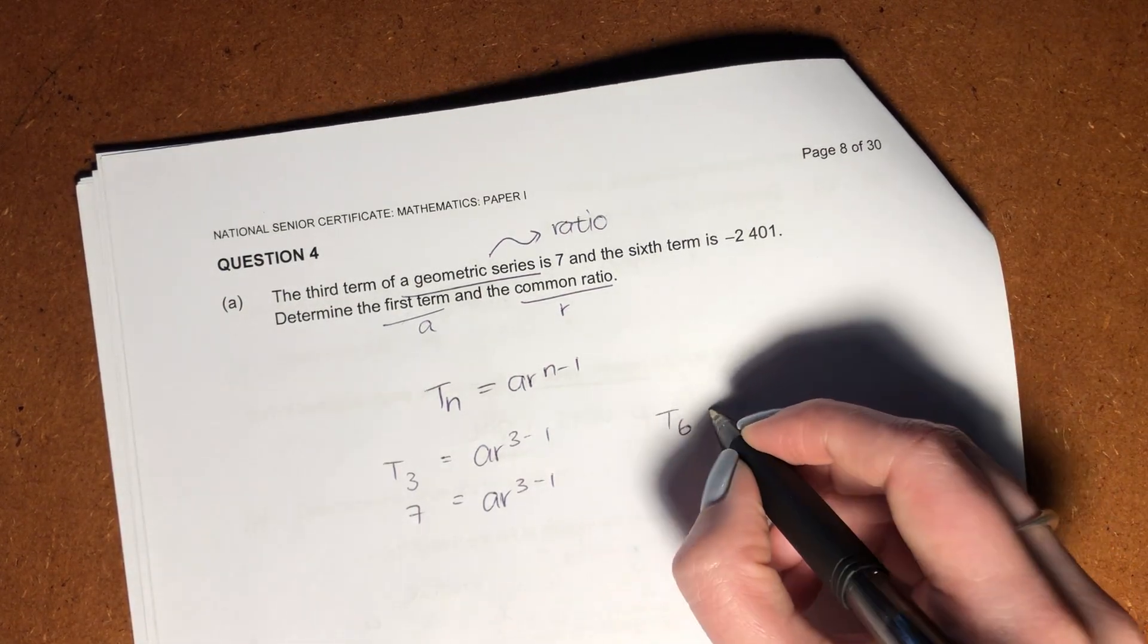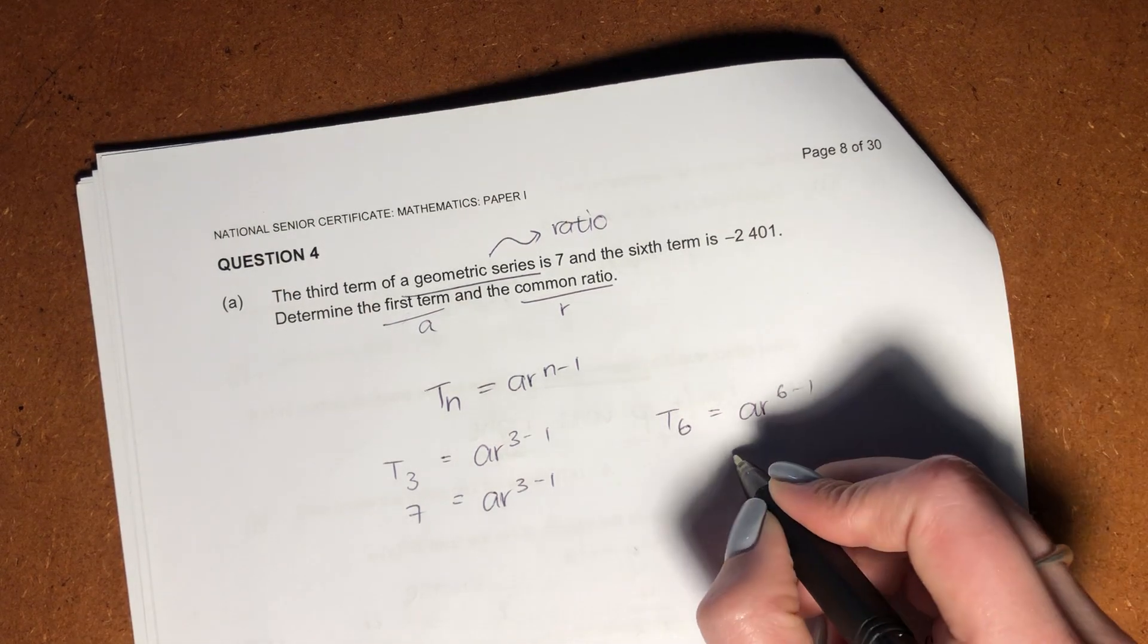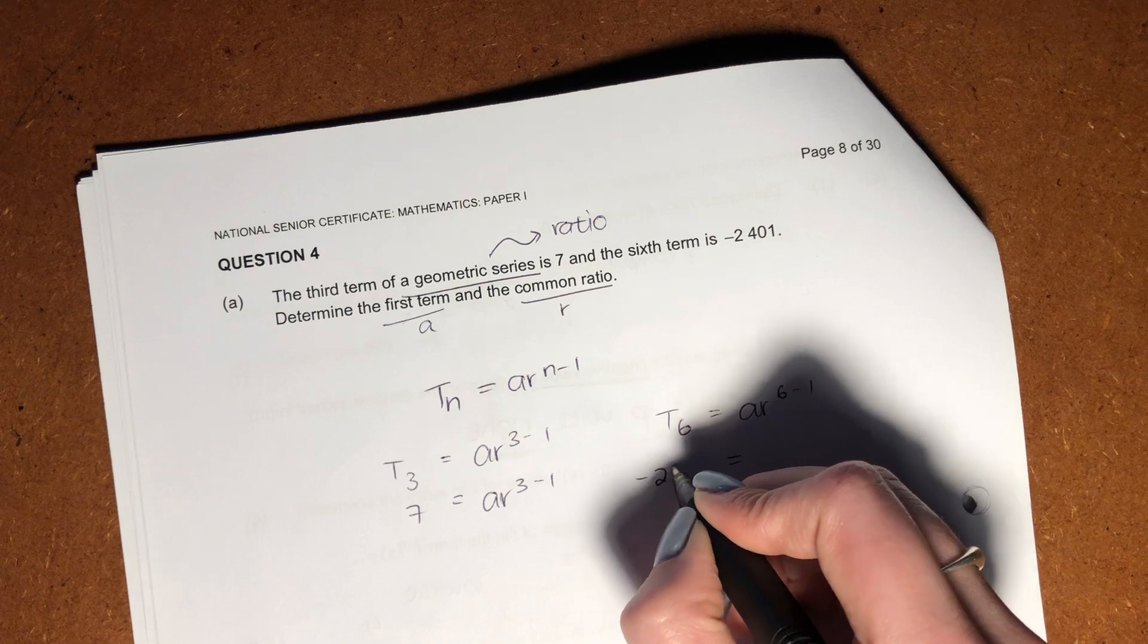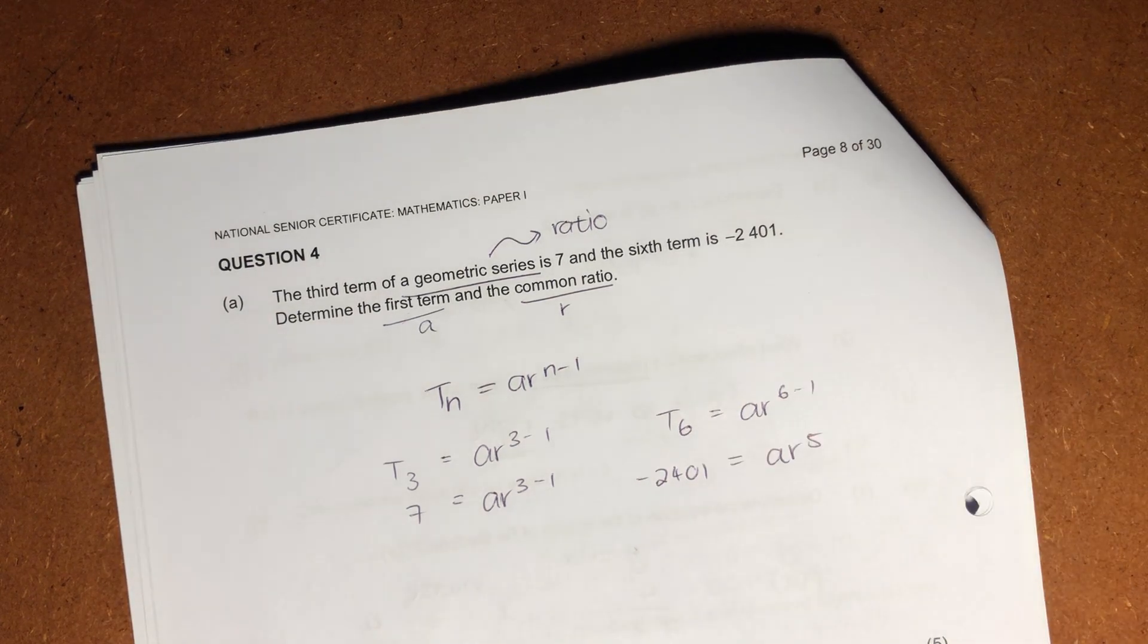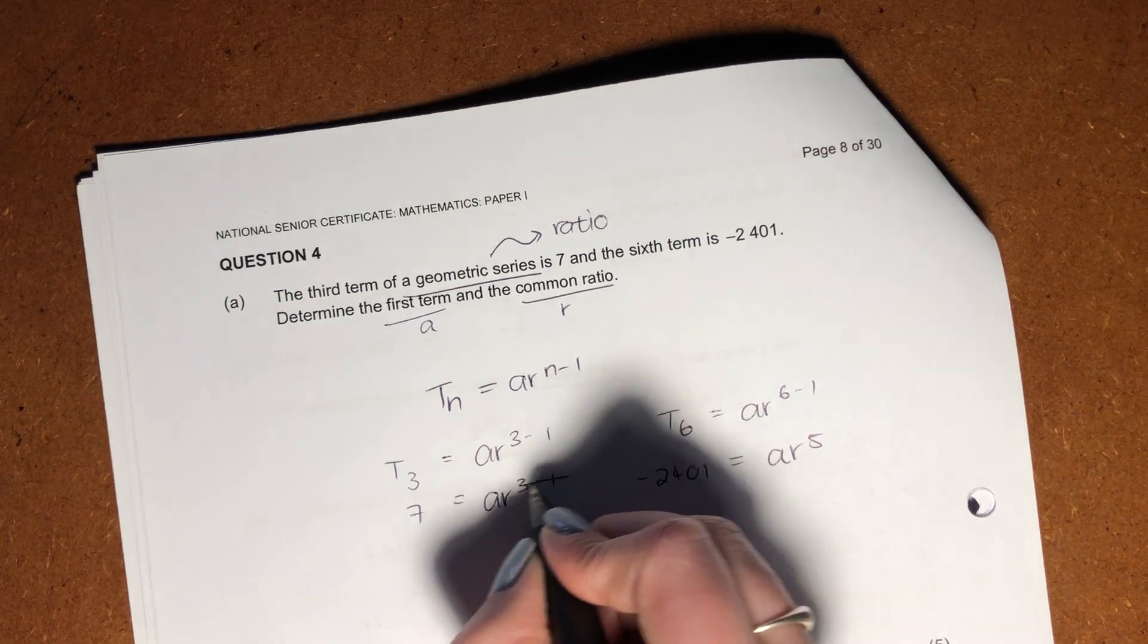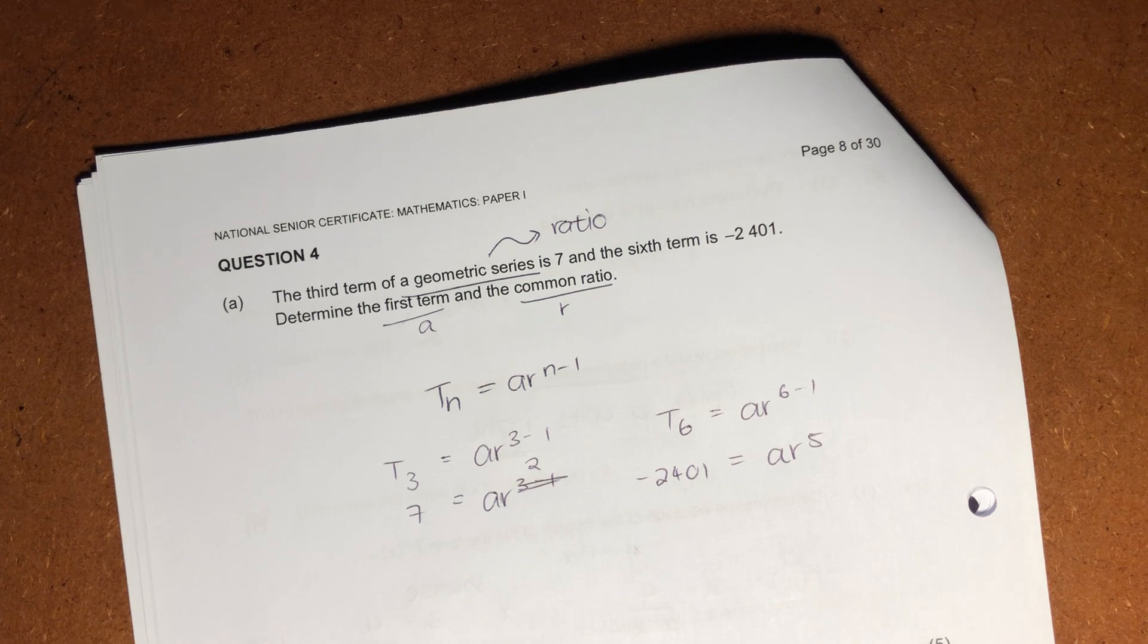Okay, we know that my sixth term equals AR^(6-1). We know that that is what it equals, and we have that. Okay, 3 minus 1 over here is just 2. So we now have these two things.